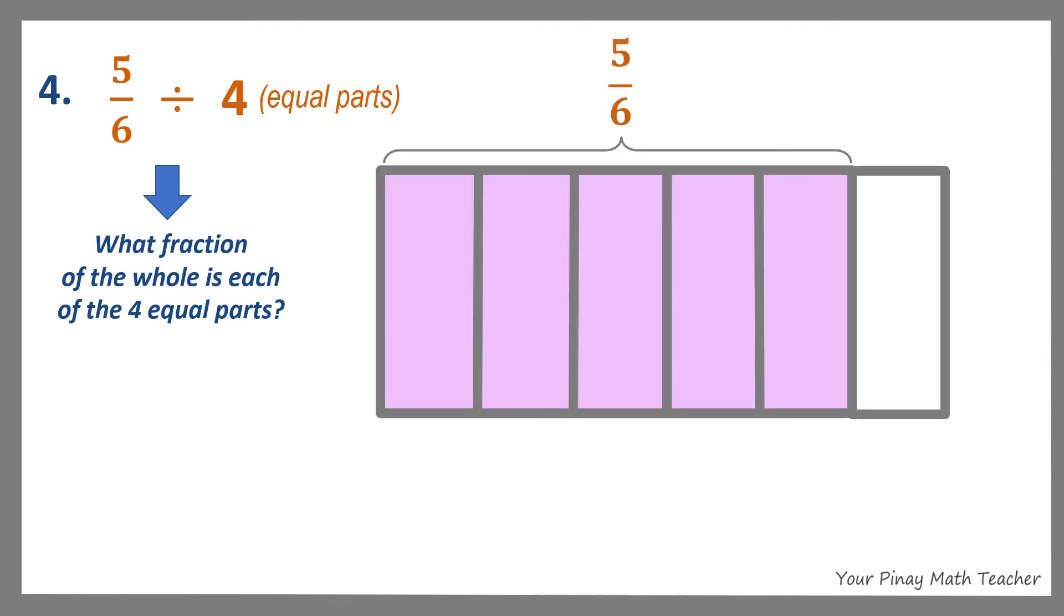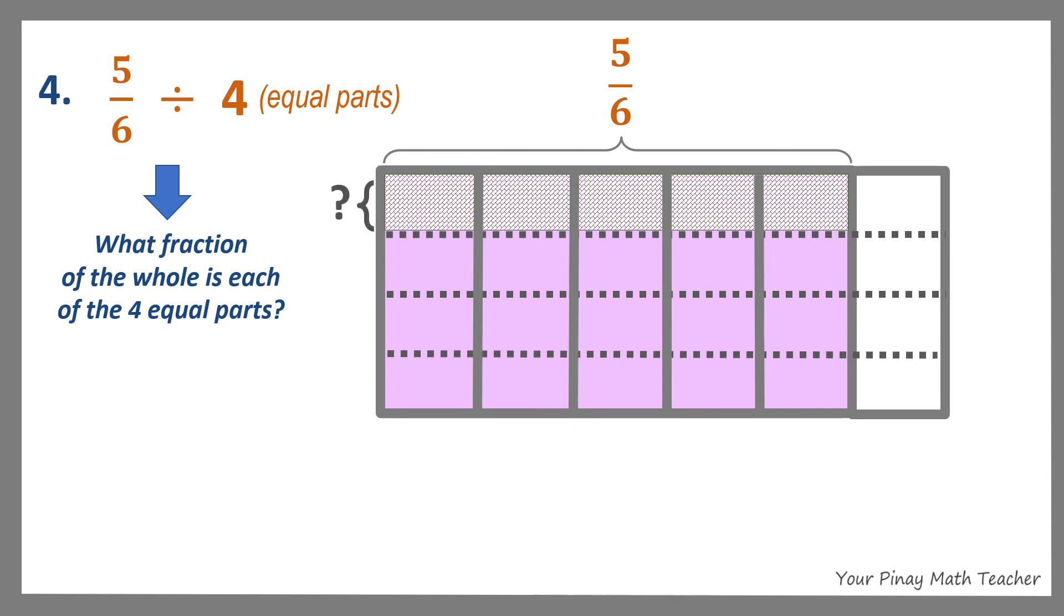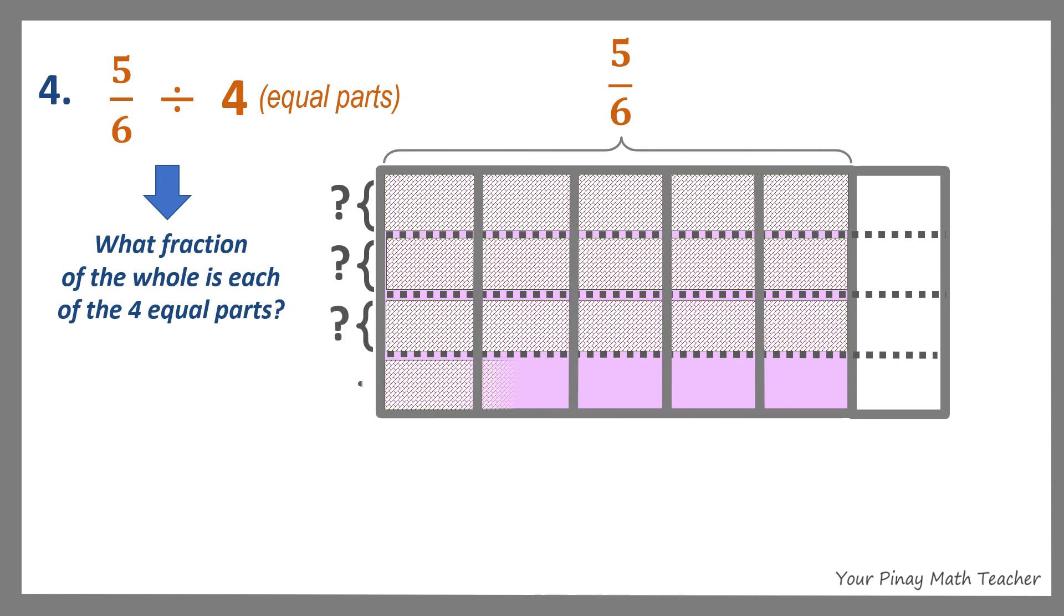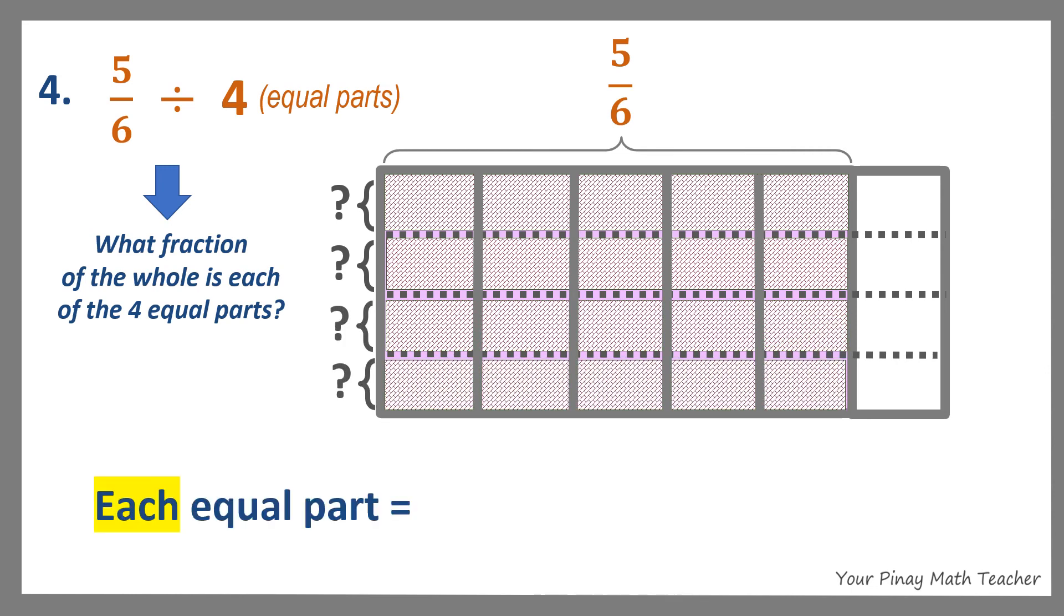So, the shaded part of the figure represents 5 sixths, which is divided into 4 equal parts. Each of the 4 equal parts is just the same as 1 out of 4, or 1 fourth, of the shaded part, which is 5 sixths. By counting, each equal part has 5 out of 24 equal parts.